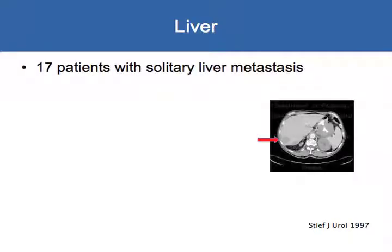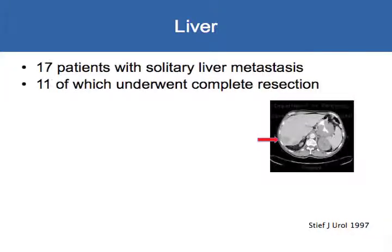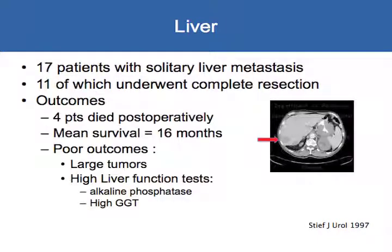Patients with liver metastases tend to do poorer than those without. This is a small study — one of only two available — of 17 patients with solitary liver metastases. Eleven underwent complete resection, but 4 died in the postoperative period, so perioperative mortality is relatively high for this group. Mean survival was 16 months, lower than described for other sites. Poor outcomes are associated with larger tumors and impaired liver function from the tumor.